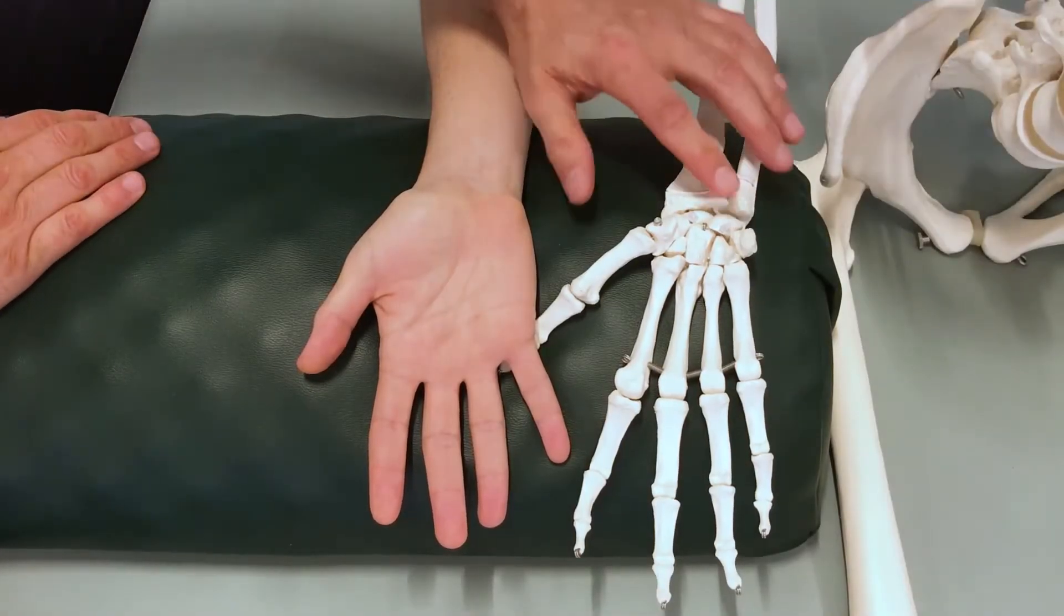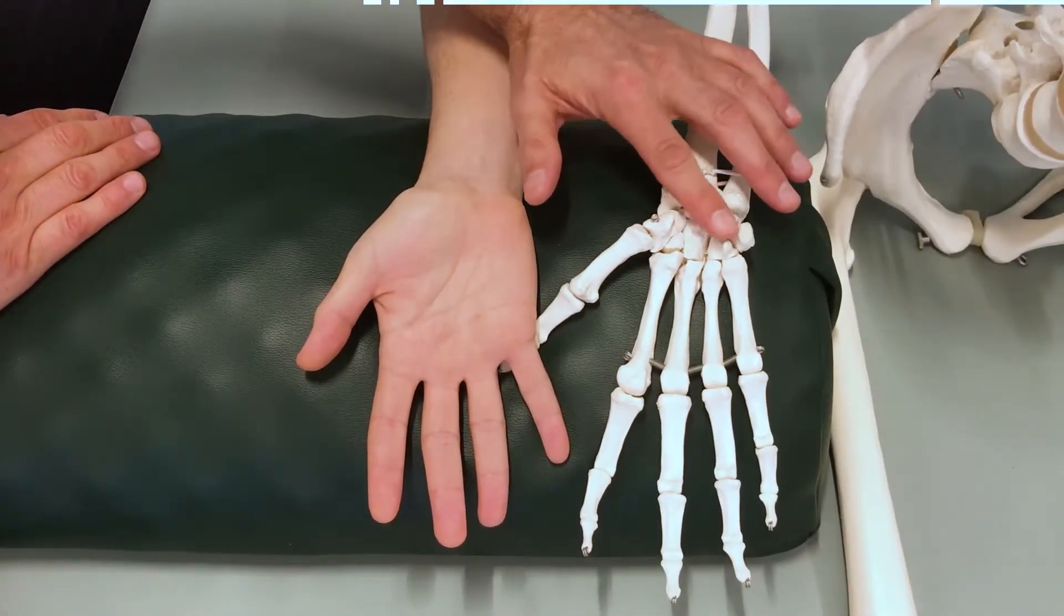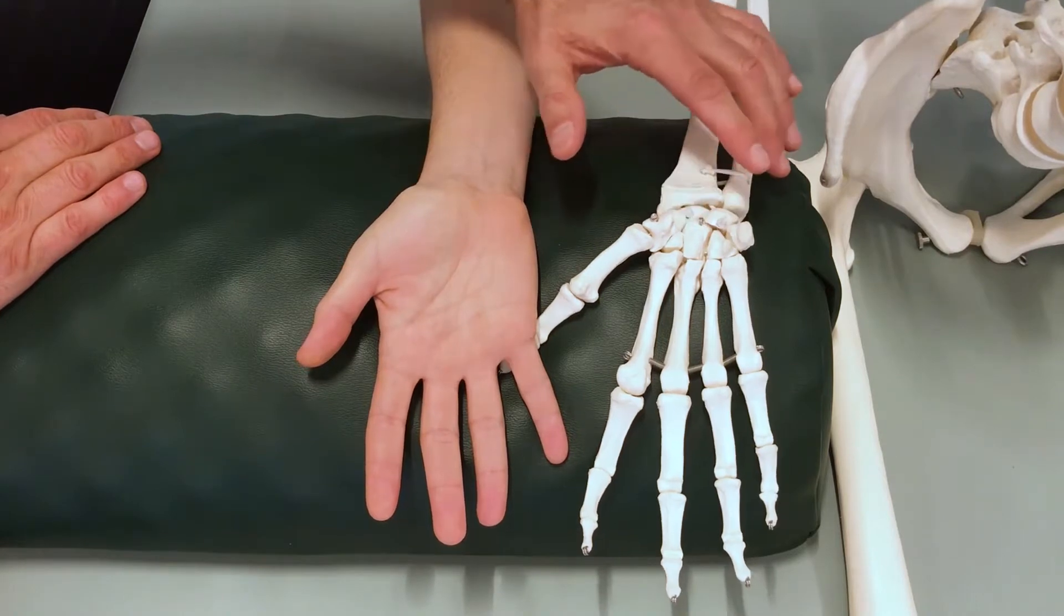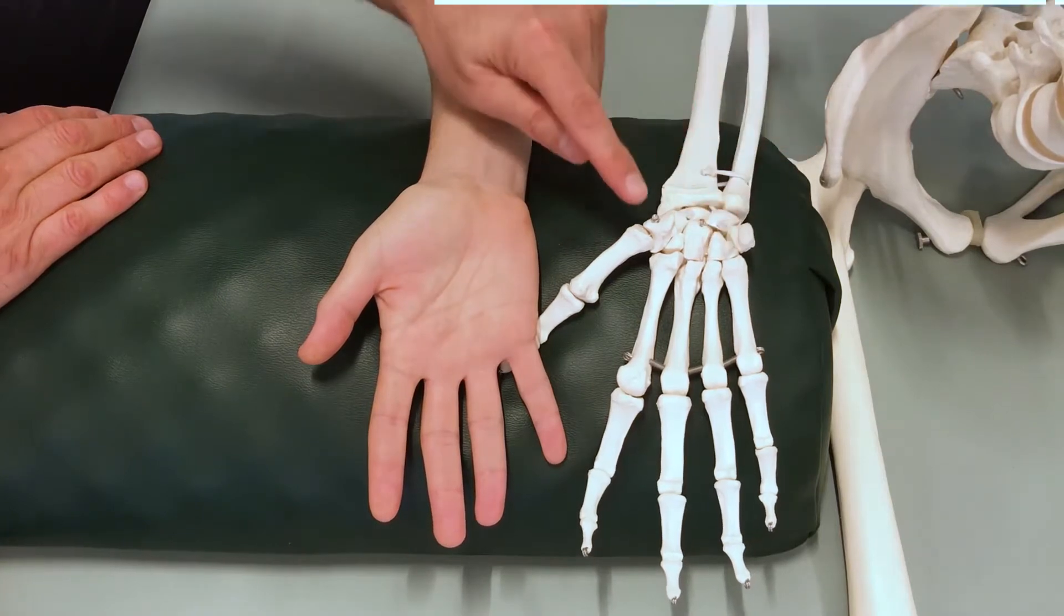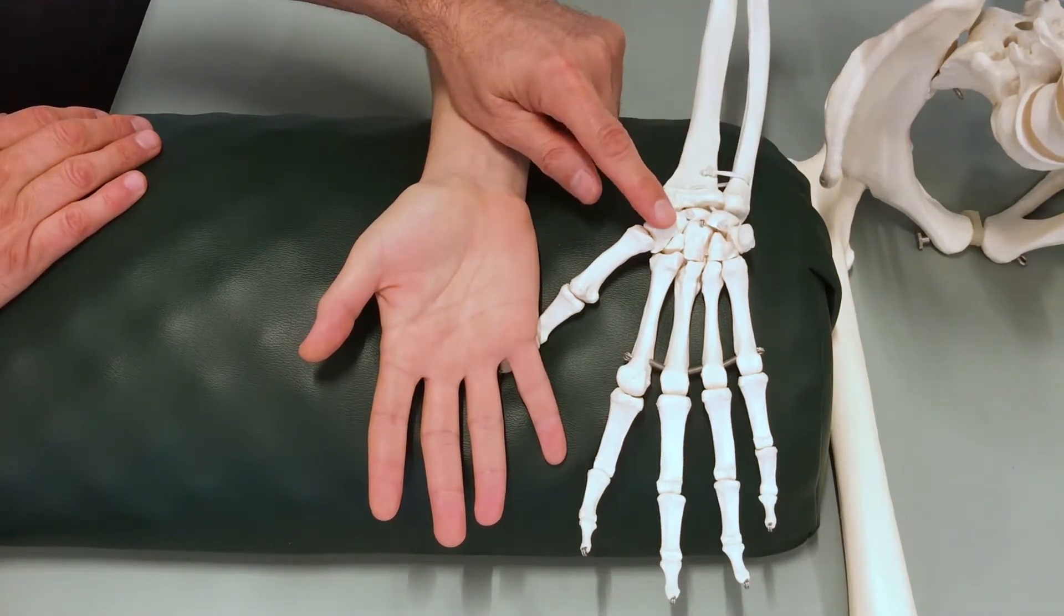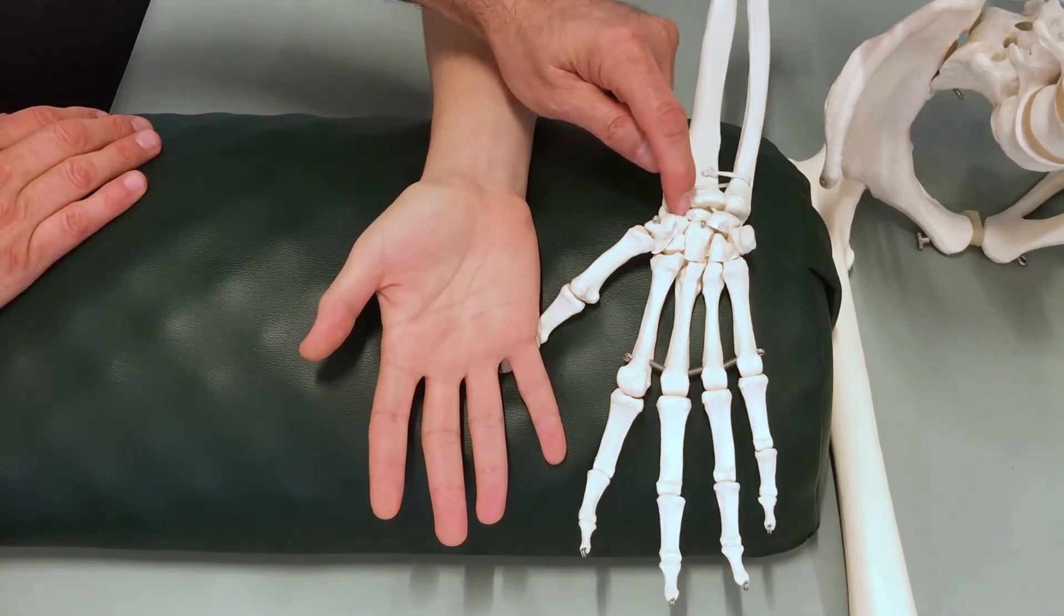There are four prominent bony landmarks on the anterior, the palmar side of the wrist. On the ulnar side we have the pisiform and the hook of the hamate. On the radial side we have the tubercle of the trapezium and the tubercle of the scaphoid.